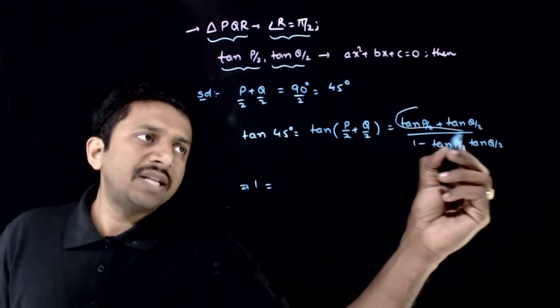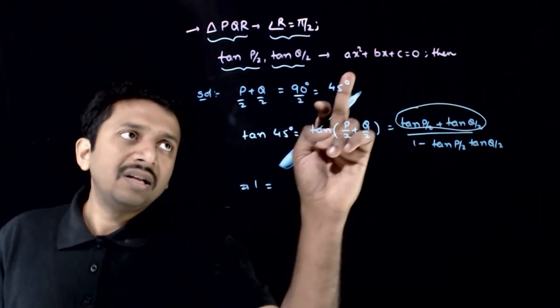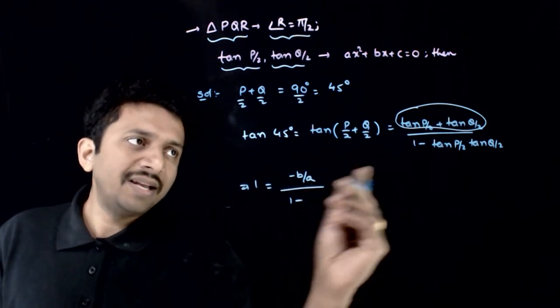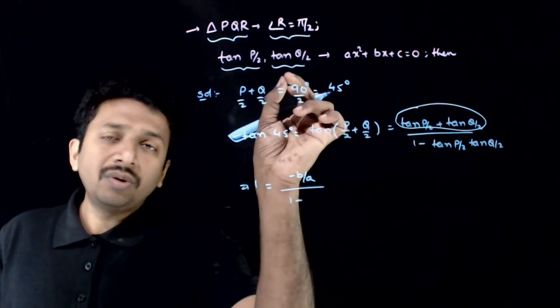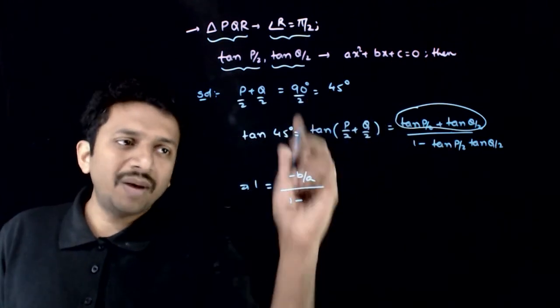tan P by 2 plus tan Q by 2 is nothing but the sum of the roots of this equation. Sum of the roots is minus B by A divided by 1 minus tan P by 2 into tan Q by 2. It is a product of the roots of this equation, that is C by A.